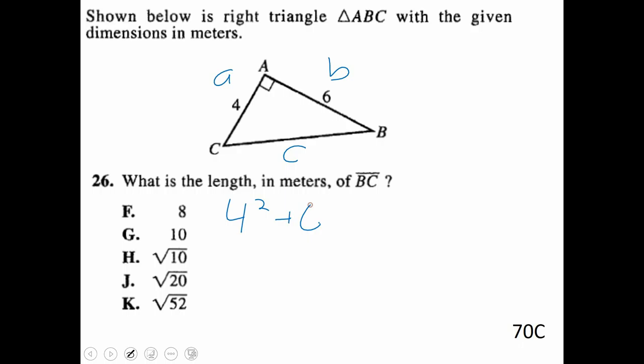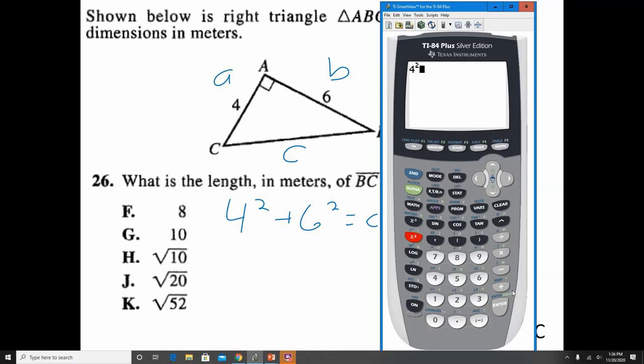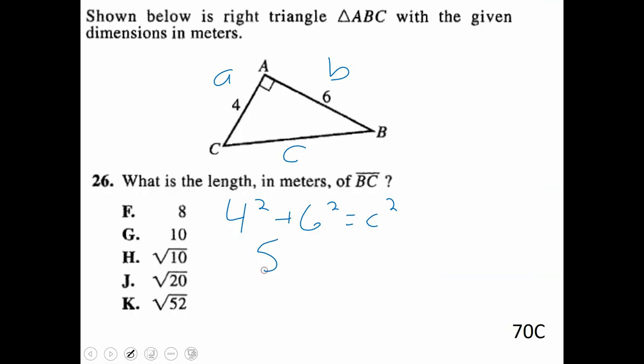And now we just plug this in. We'd have four squared plus six squared equals C squared. You can go back on your calculator and just do four squared plus six squared. You may not need to. You may be able to do that in your head. But we can just do four squared plus six squared. That gives us a value of 52. So we've got 52 equals C squared. Be careful.